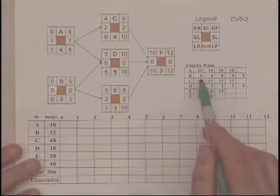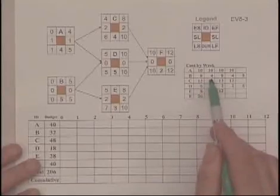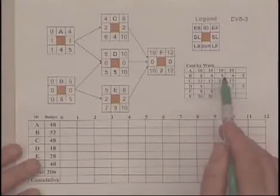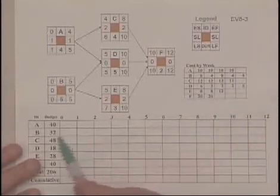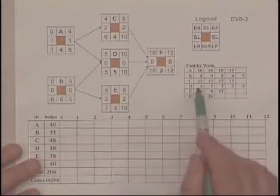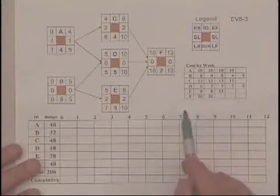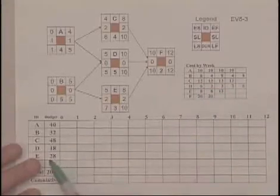We see the cost varies: $8,000 the first month, $4,000 the second, $8,000 the third, $4,000 the fourth, and so forth. Activity C has a total cost of $48,000 spread evenly across the four months.